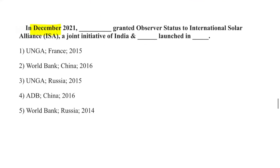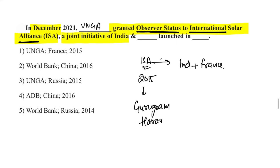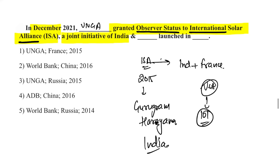The United Nations General Assembly granted observer status to the International Solar Alliance, a joint initiative of India and France launched in 2015. ISA's headquarters is in Gurugram, Haryana. The USA recently joined ISA, becoming the 101st country to join the ISA framework.